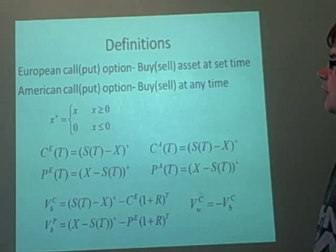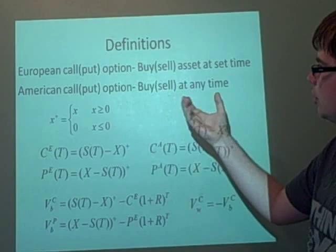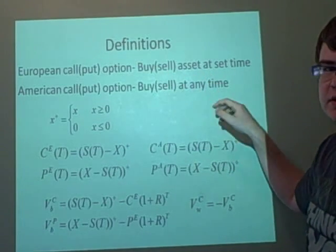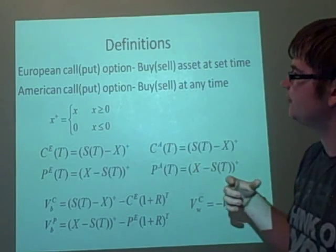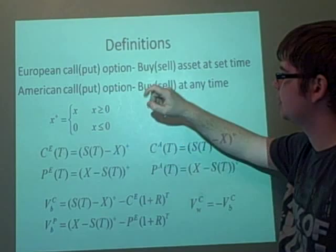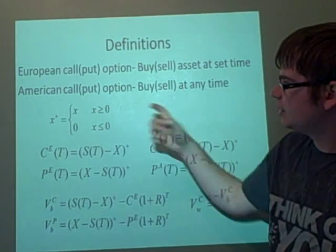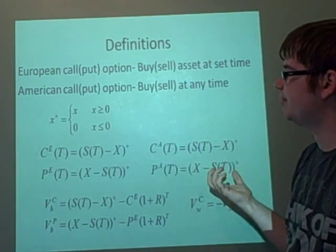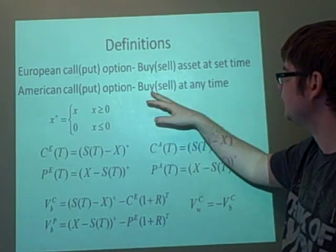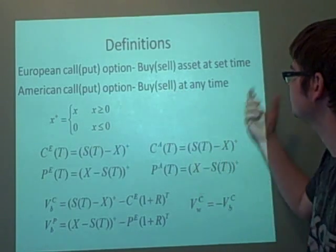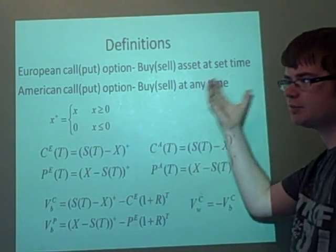Now onto options. We have European and American call options. A European call option is where you buy an asset at a certain time. So you're told the time that you can buy it. A put option is where you can sell it at a certain time, we call it T. An American one, however, this is a bit better really, but you don't get as good an offer. This is where you can buy or sell at any time up to that point, whereas European is at a specific time.